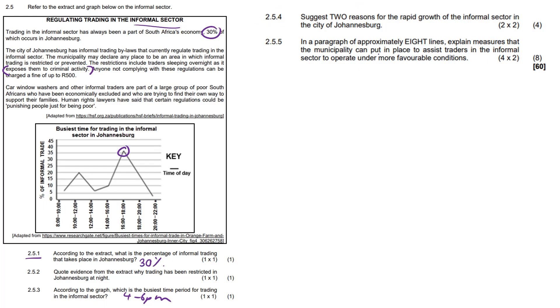2.5.4. Suggest two reasons for the rapid growth of the informal sector in the city of Johannesburg. So suggest two reasons. Well, firstly, there's a high unemployment rate. So people have to turn to the informal sector. So unemployment has zooped straight up.